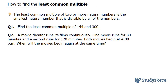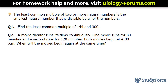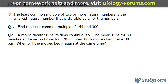In this lesson, I'll show you how to find the least common multiple. The least common multiple of two or more natural numbers is the smallest natural number that is divisible by all of the numbers. We use this technique quite a lot when finding the lowest common denominator when adding and subtracting fractions.